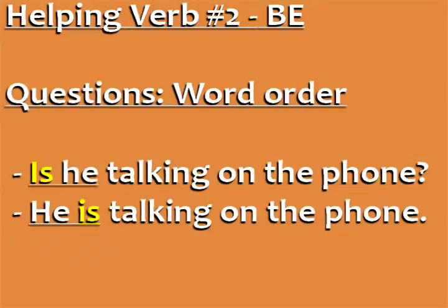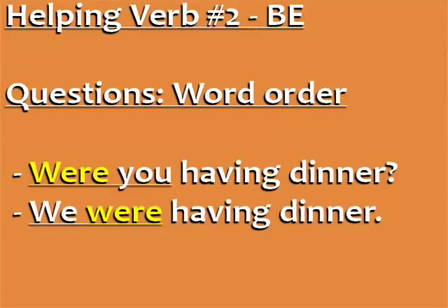When you ask a question, the word order is different and the helping verb comes before the subject. For example: is he talking on the phone? The helping verb 'is' comes before the subject 'he.' When you make a statement, this order is reversed: he is talking on the phone. Here's another example — were you having dinner? The helping verb 'were' comes before the subject 'you' in the question form. In the statement the order is reversed: we were having dinner.